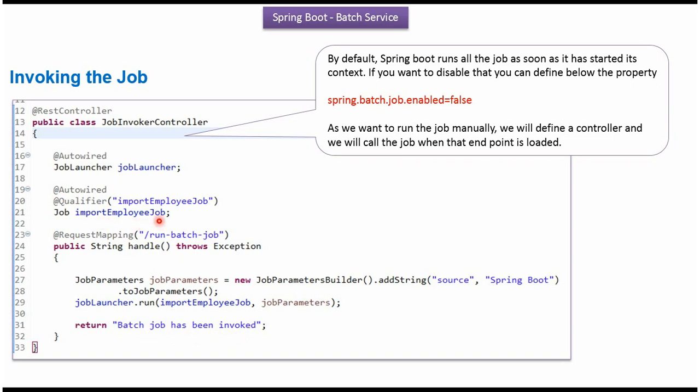What it will do is read the CSV file content which has employee information and insert the data into the employee table. By default, Spring Boot runs all jobs as soon as its context has started. If you want to disable this, you can define the property spring.batch.job.enabled=false, and then invoke the batch job manually by sending a request to the specified path.